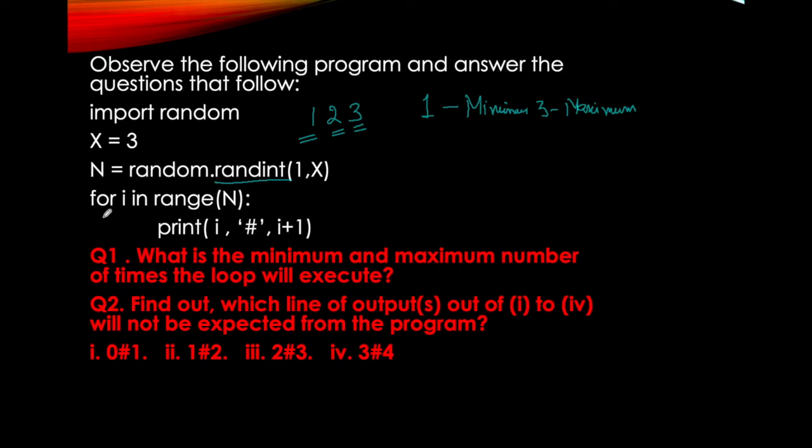Now we have for i in range(N). If N was 1, then for i in range(1) means what? It will work only for 0. That's how range works - whatever N is given, it never takes that, it goes up to one less than that, and starts from 0 by default. So for i in range(N), if N is 1, then it will work only for 0. If N is 2, then it will work for 0 and 1. If N value is 3, then it will work for 0, 1, 2.